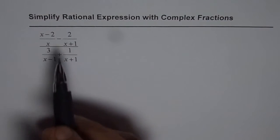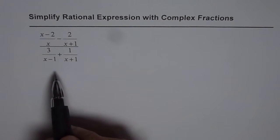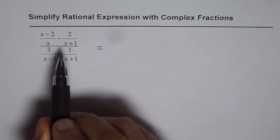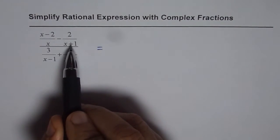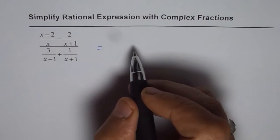Now we have fractions in the numerator and fractions in the denominator that makes it really complex. To solve such an expression, what we can do is take common denominators in both numerator and denominator and then simplify.